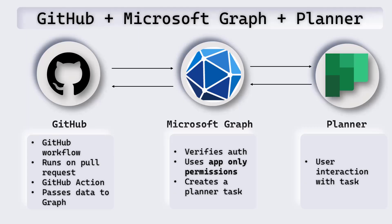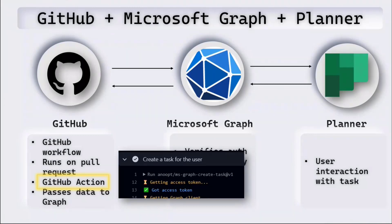Let me go back to the slides. To recap: what we saw was a GitHub workflow which triggered on pull request, and that called a GitHub Action, which then passed the data to Microsoft Graph. Microsoft Graph then went ahead and created a task in the Planner. Our main focus here is the GitHub Action used to call Microsoft Graph — the one we saw run earlier in the workflow. That particular GitHub Action is nothing but a Node.js project.